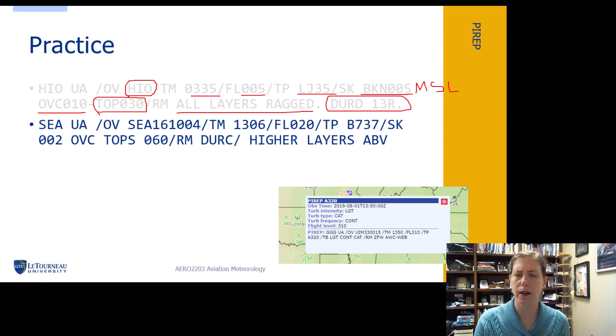Let's take a look at another one. Here's one at Seattle. And they have on the 161 degree radial at four nautical miles distance. We've got the 1306 UTC. They are at 2,000 feet MSL that they're reporting this. It's a 737. Right now, they said that the sky conditions are 200 feet MSL overcast, and they got tops at 6,000 feet. The aircraft was in a climb. And it also reported, this is kind of where we get in the plain language, higher layers above. ABV, that abbreviation is above.